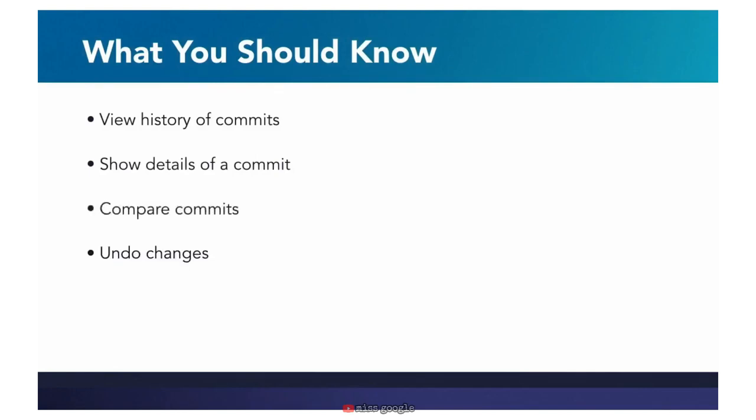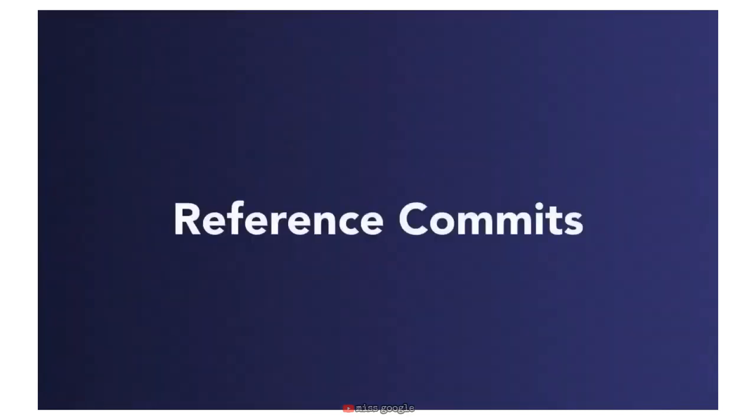We learn to view a history of commits and view details of a specific commit. We can compare commits using diff, and we learn how to undo changes — either to make commits that undo changes or to get old versions of a file out of the repository. These are all essential Git skills you need before starting this course. In this chapter, we're going to learn how to navigate the repository's commit tree.